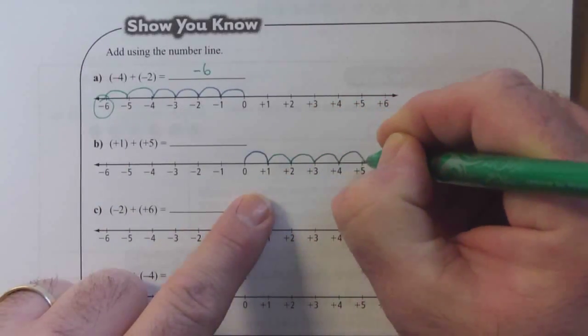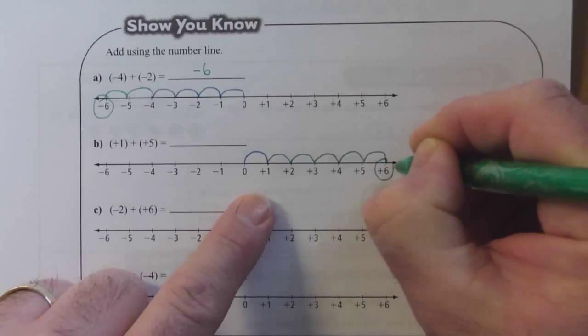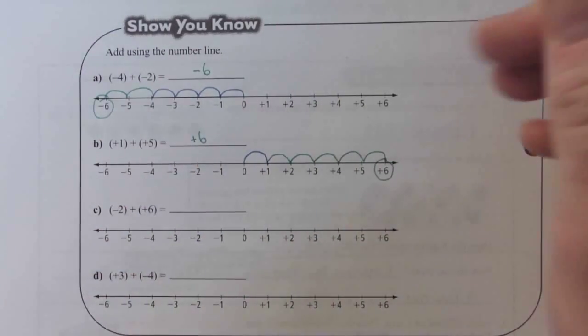One, two, three, four, five leaps. Our answer is positive six in this one.